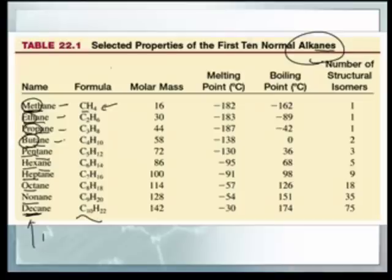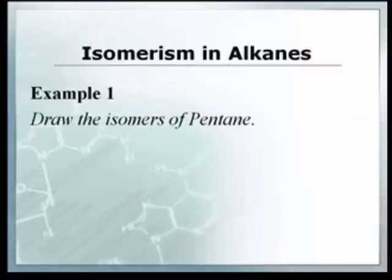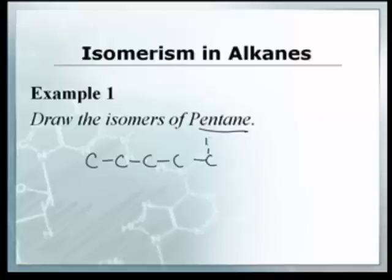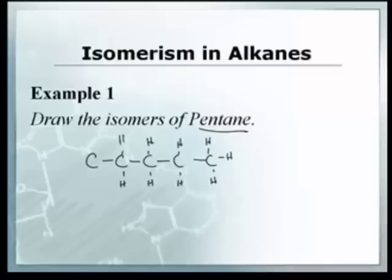There is also something called isomerism. If we have pentane — pentane has five carbons like a pentagon — I've got five carbons with hydrogens on the outsides. We're going to draw all the hydrogens for now but we'll get lazy soon and stop drawing them. The idea is: once you've placed all the carbons, you fill remaining bonds with hydrogens so every carbon has four bonds total. This is called pentane.